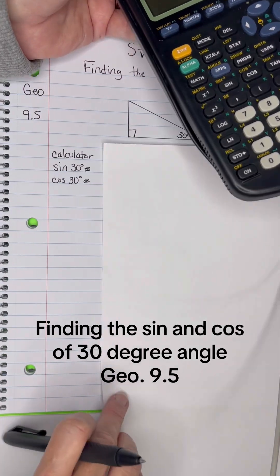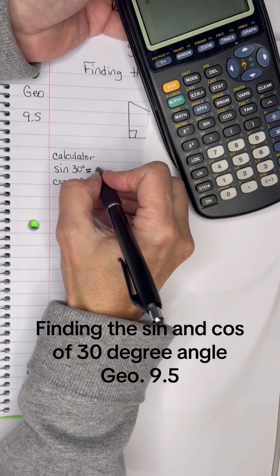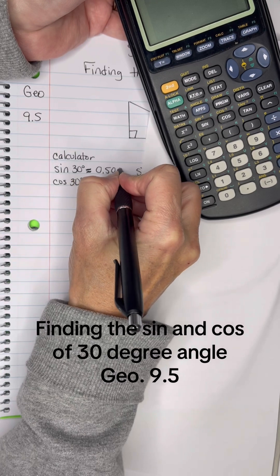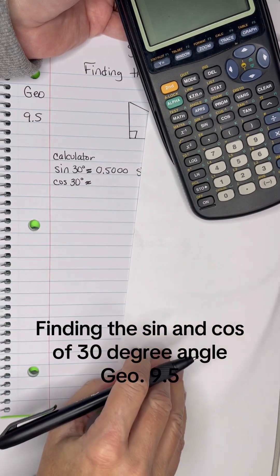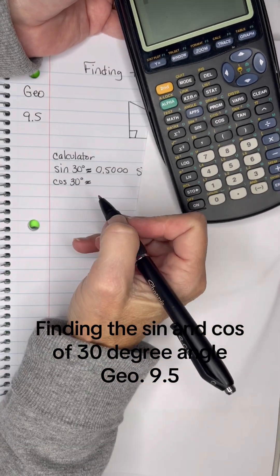Now we know we want that written with four places after the decimal, so 0.5000, okay, and that is equal to it.